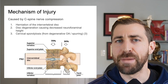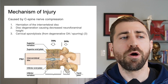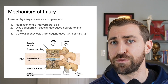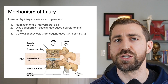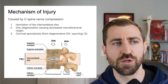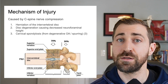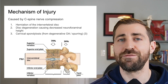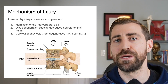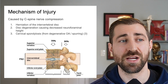So what is the mechanism of injury for cervical radiculopathy? You can either have a herniation of the intervertebral disc — generally speaking, this is going to be a posterior lateral herniation. It could also be disc degeneration causing decreased neuroforaminal height. If the disc height is shrinking, the intervertebral foramen will also get smaller with that decrease in disc height.